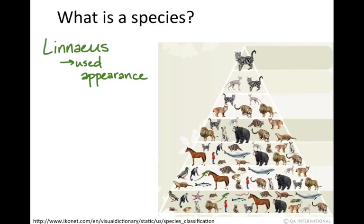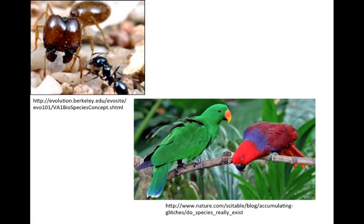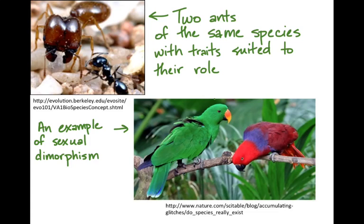This is called the morphological species concept because morphology determines the groupings. But modern genetics has taught us that morphology can be very misleading — many organisms that look very different have very similar genes, or they might look very similar but have very different genes. One example would be these ants here, members of the same species but clearly looking very different because they're adapted for different tasks. And then these birds, which for a long time we thought were different species, are actually a great example of sexual dimorphism where the male and female look markedly different due to sexual selection.